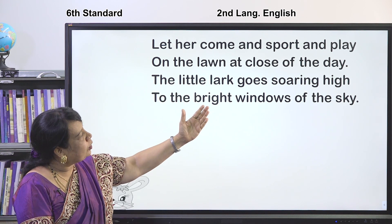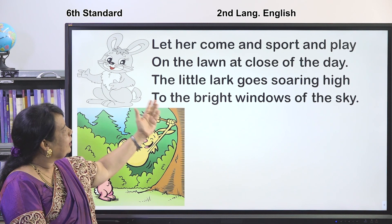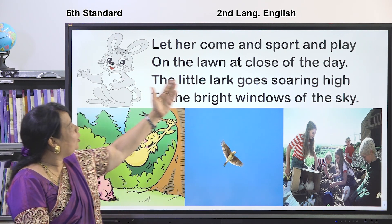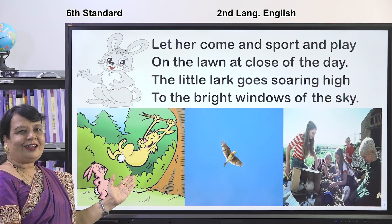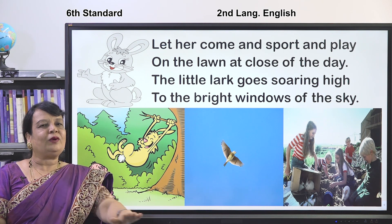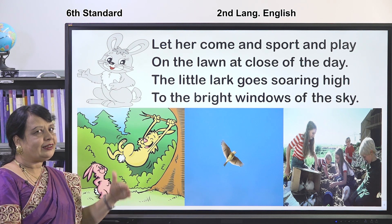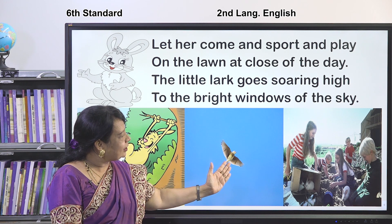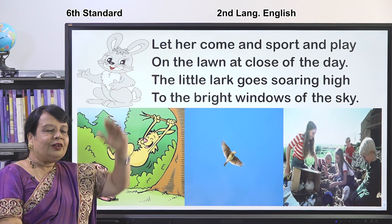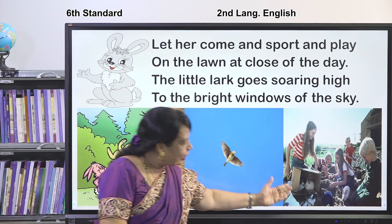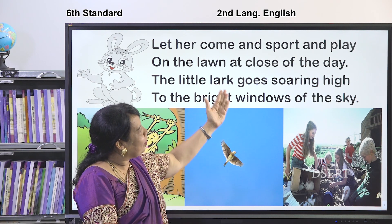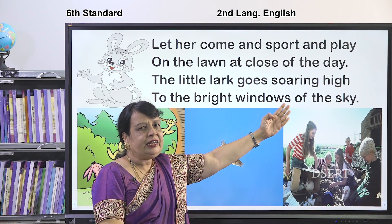Third stanza: 'Let her come and sport and play on the lawn at close of day. The little lark goes soaring high to the bright windows of the sky.' The hare plays happily on the lawn — a grassy place. The little lark flies soaring high up in the sky. Rhyming words: play/day and high/sky.